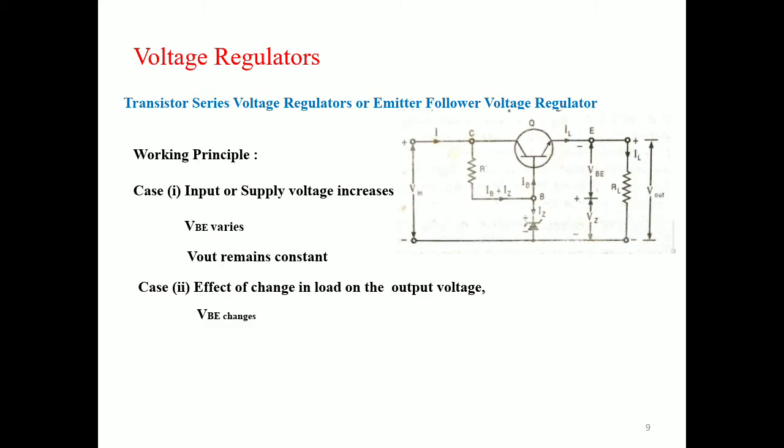Case 2: consider the effect of a change in the load on output voltage. If the load current increases due to a decrease in R_L, the output voltage V_out tends to fall. Therefore V_BE tends to increase, causing the conduction level of the transistor to increase, leading to a decrease in the collector-emitter resistance. The decrease in collector-emitter resistance causes a slight increase in the input current to compensate for the decrease in R_L, thereby maintaining the output voltage constant.